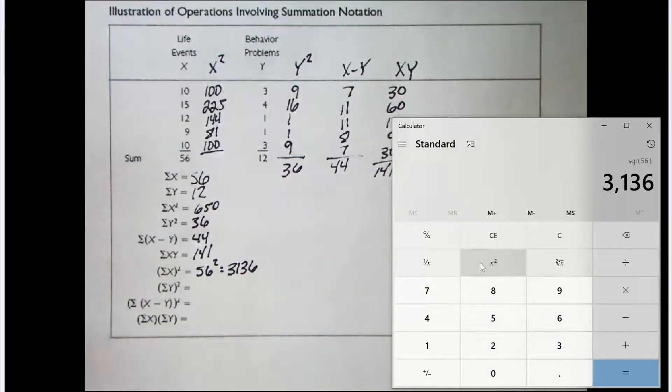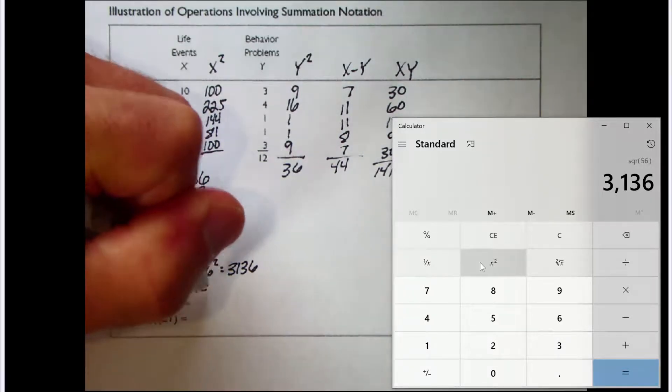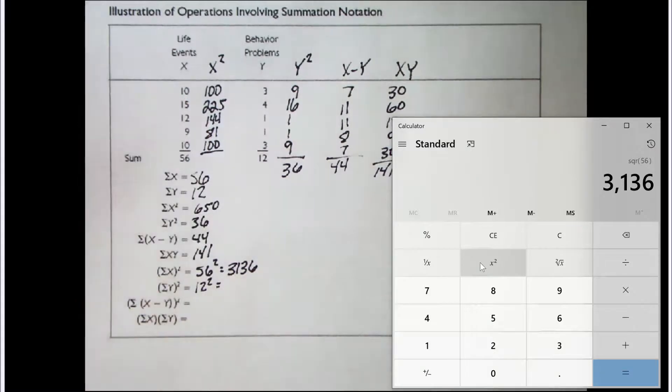Looks like the next one is similar. Here we have the sum of Y, that quantity squared. But we already know the sum of Y equals 12. So we need to square that quantity. So we need 12 squared. And 12 squared is 144.